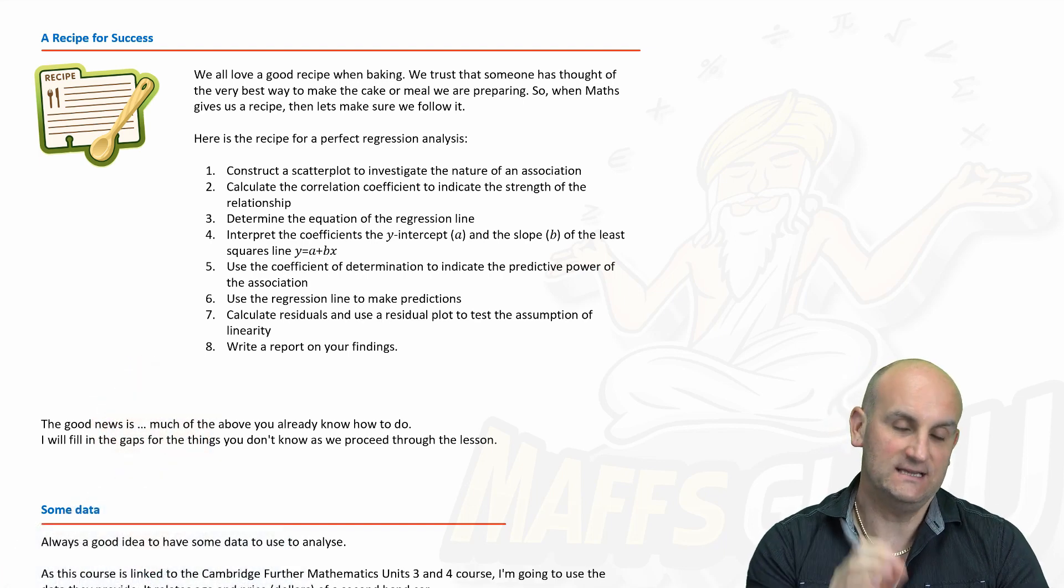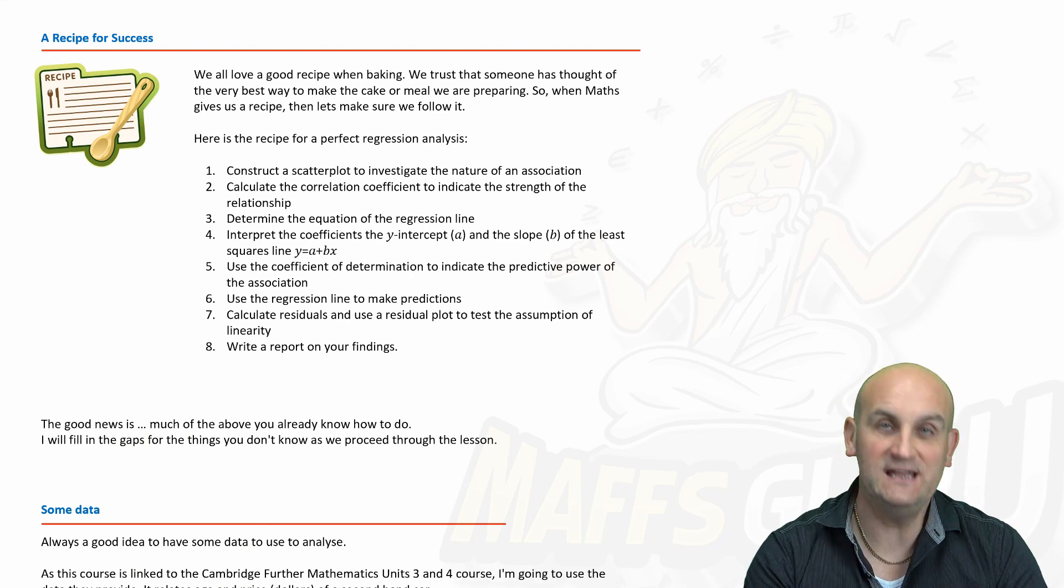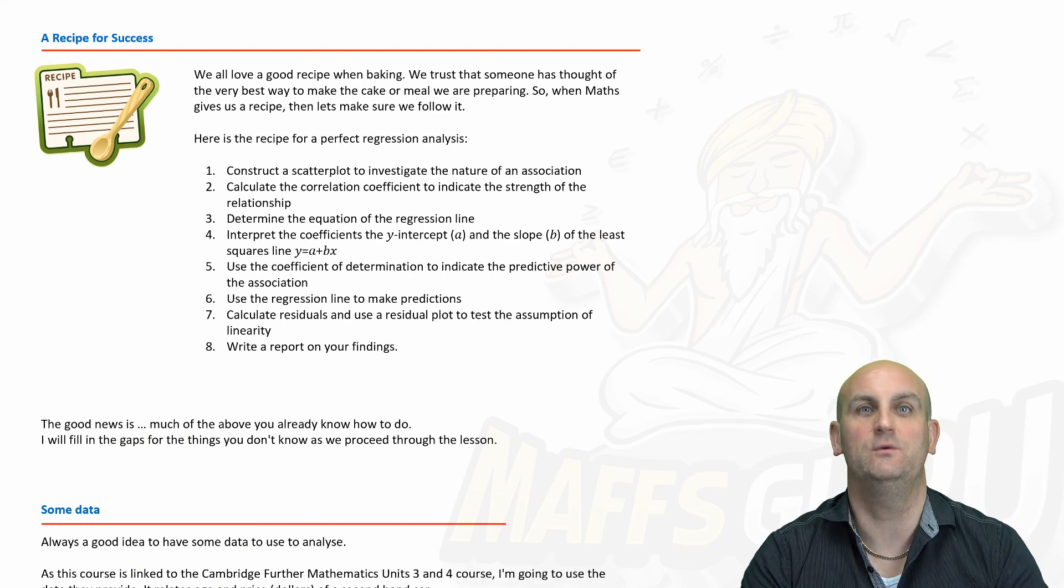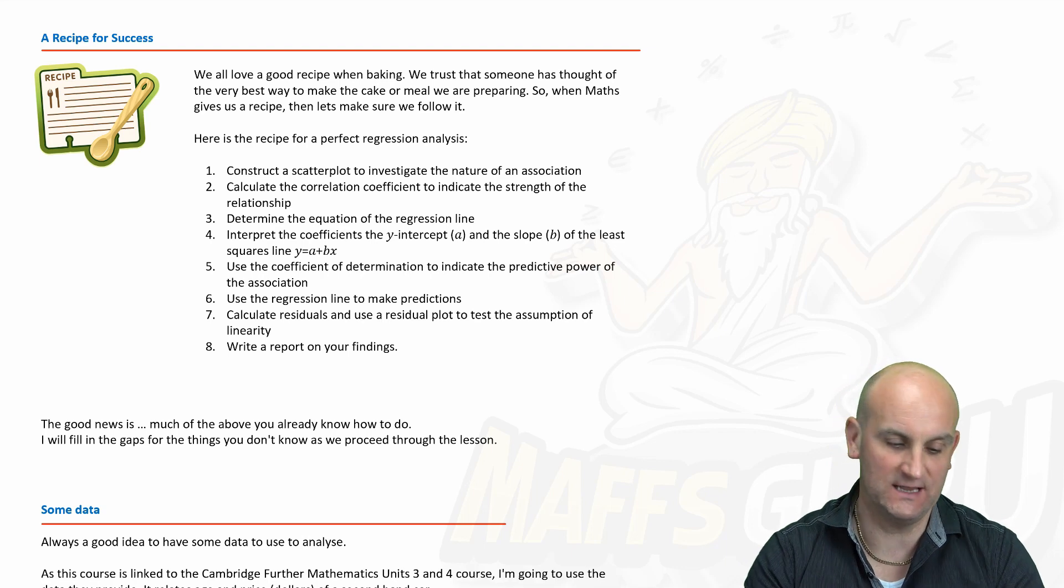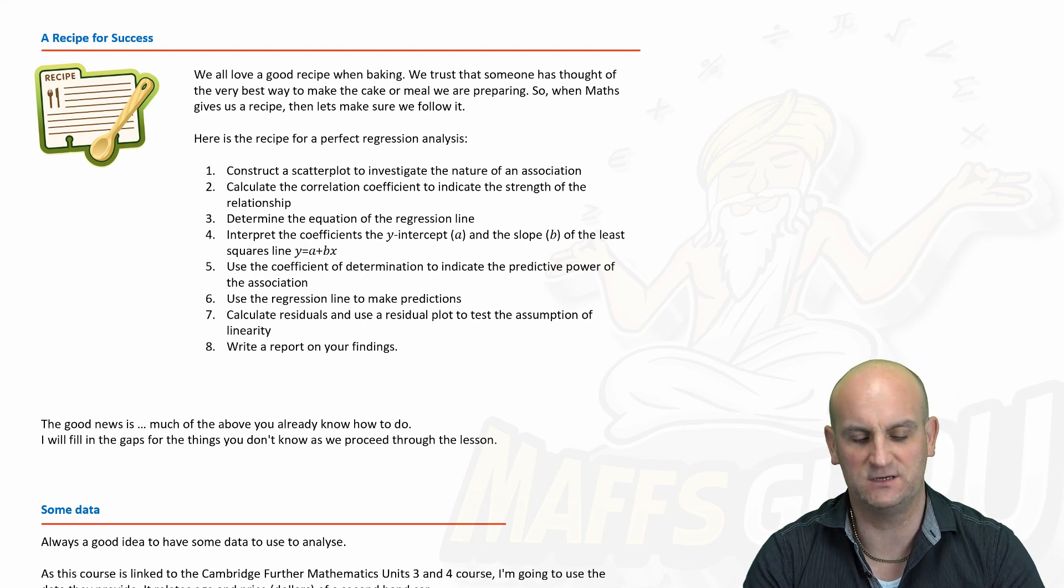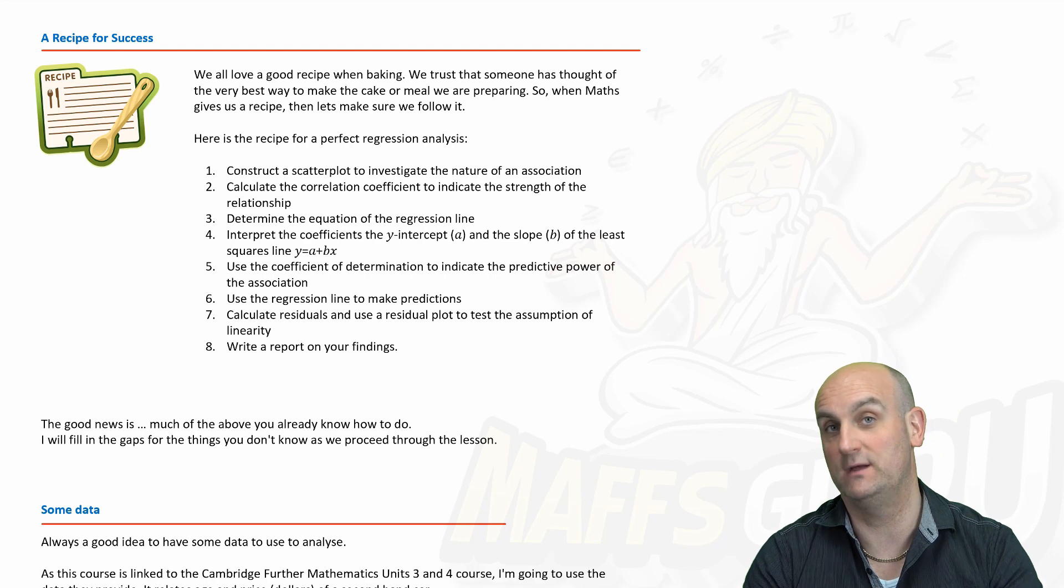The recipe of success is shown above or behind me and literally it says those eight points should be able to give you 100% in every single regression analysis you could ever possibly do so long as we follow the recipe that is given. So number one is construct a scatter plot to investigate the nature of an association. Number two to calculate the correlation coefficient to indicate the strength of relationship and so it goes on.